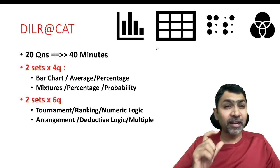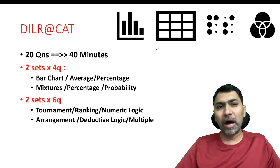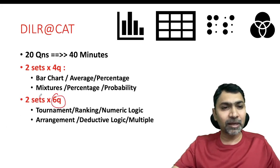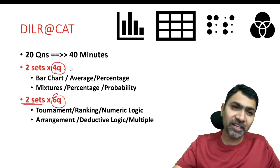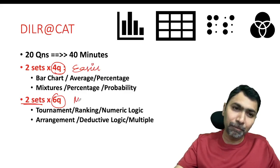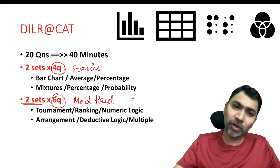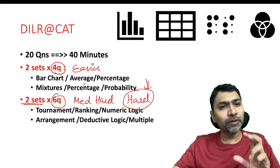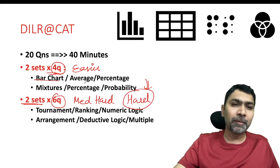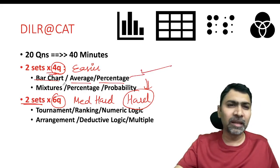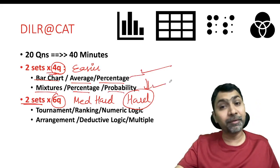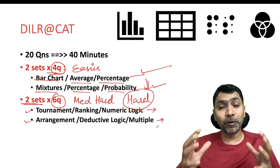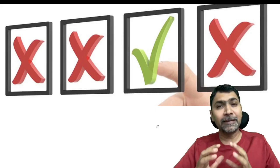In the last CAT, especially 2021, there were 20 questions and 40 minutes. For the first time we saw question sets with six questions, so probably this four-question set was easier and this was medium to hard difficulty, and one set was really very hard. Out of these four sets, I would say two sets—bar chart averages percentage—very much doable. This set on mixture percentage probability, still doable but with time. The second and third sets were taking a good amount of time and many times it may not be possible to crack the set.